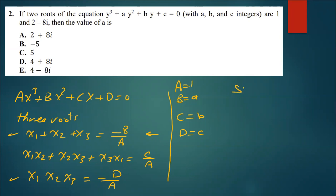So from this equation, the sum of roots should equal negative B over A, which in this case B is a, A is 1. So it would be negative a. The roots are 1 and 2 minus 8i.